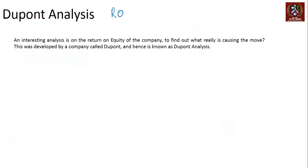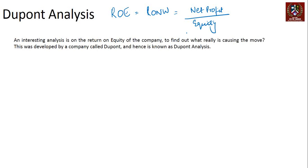Now let's talk about Return on Equity, also known as Return on Net Worth. Return on net worth is calculated as net profit divided by the equity of the company, where equity is share capital plus reserves and surplus. An interesting analysis on ROE was done by a company called DuPont, and hence it is called DuPont analysis.